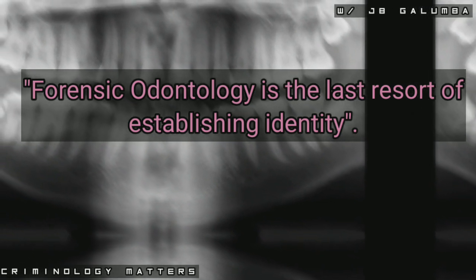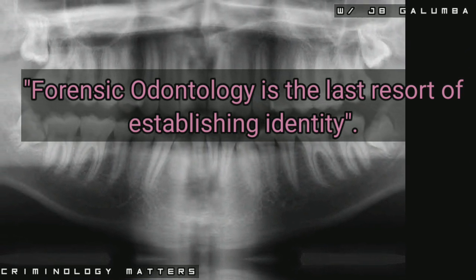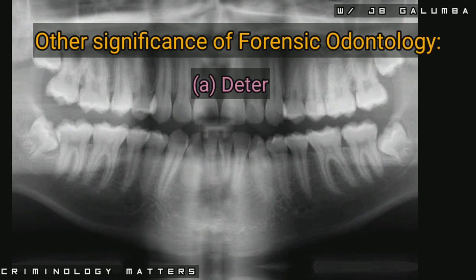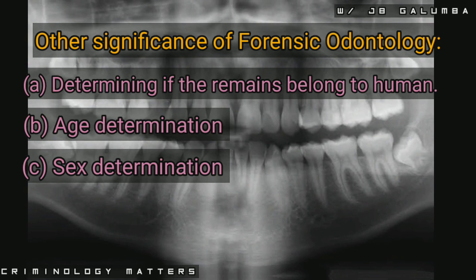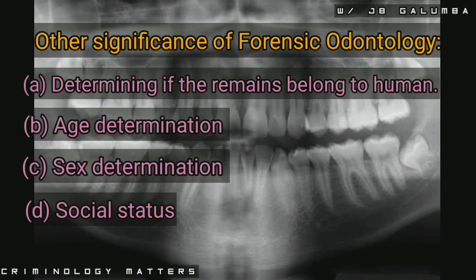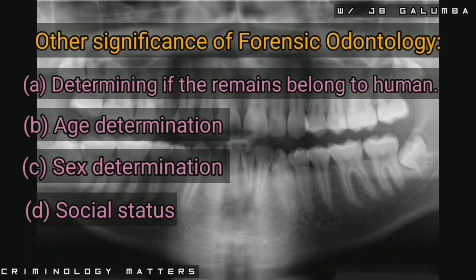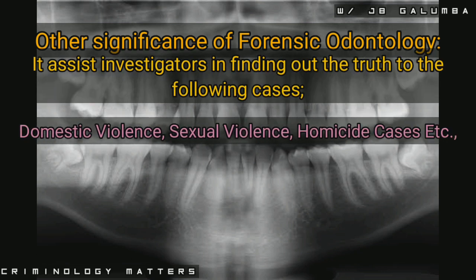Aside from its significance in personal identification, forensic odontology is also relevant in establishing whether the remains are of human origin, in establishing the age of the remains, the sex, and sometimes even the social classification of the remains through dental examination. Forensic odontology also helps criminal investigators in dealing with crimes such as domestic violence, sexual violence, and even homicide, where the teeth can serve as a supplementary weapon in committing a crime.